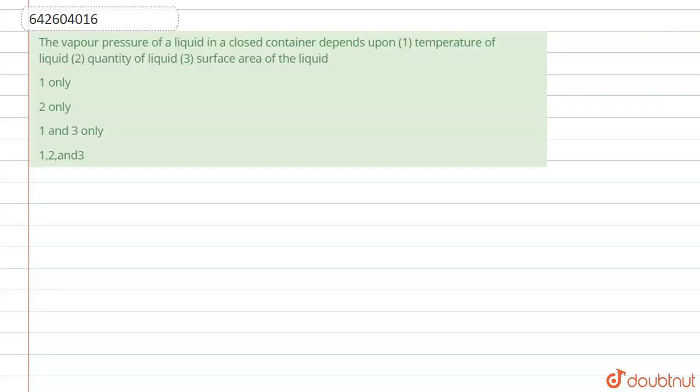Hello everyone. So today's question is, the vapor pressure of a liquid in a closed container depends upon three factors. As per their option, first one is temperature of liquid, second one is quantity of liquid and third one is surface area of the liquid. We have to match which one option satisfies this question.